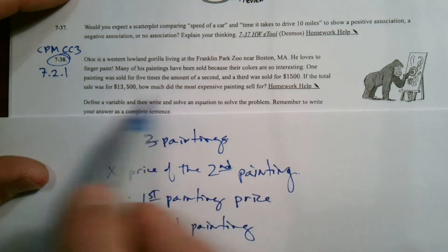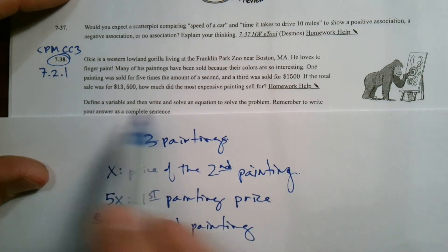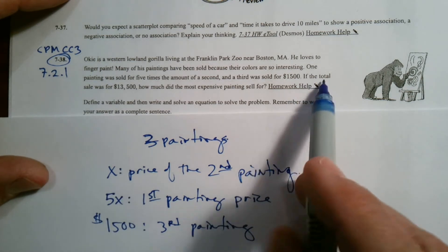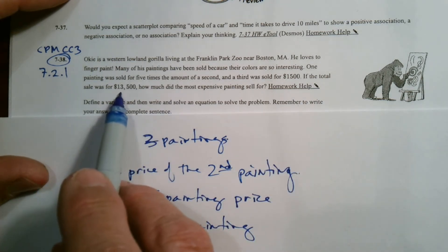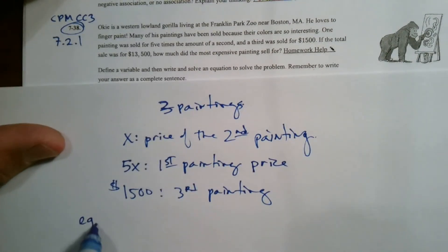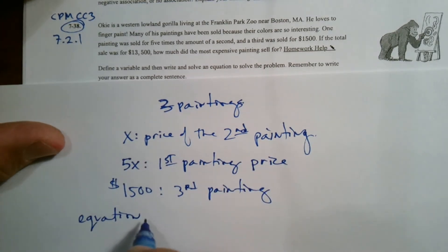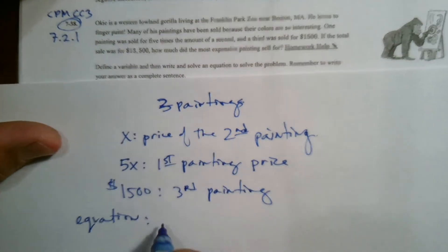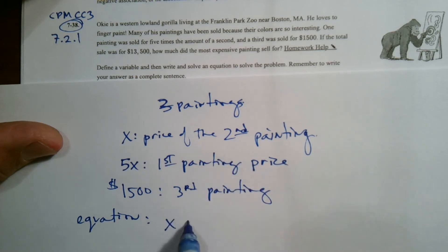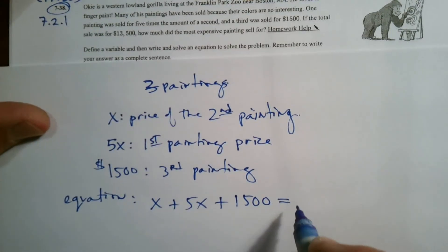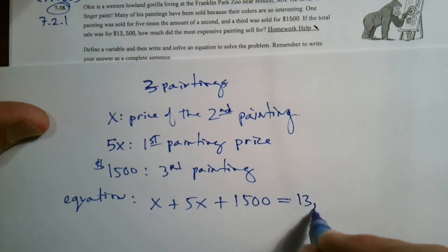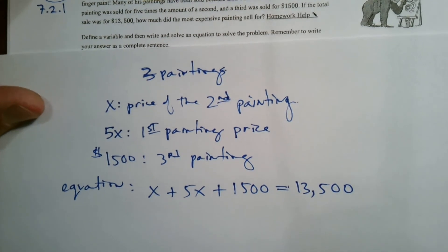Now, this is the check part — if I were doing a guess-and-check table, this is where the equation comes from. The total sale was $13,500, so my equation is: X plus 5X plus 1,500 equals 13,500. The second painting plus the first painting plus the third painting all add up to the total.